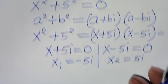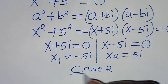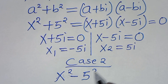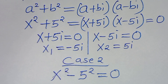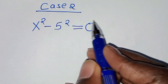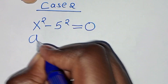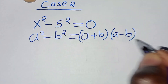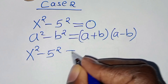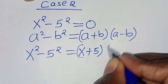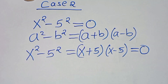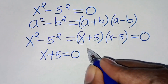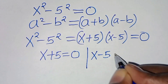Let's proceed to case 2. In case 2, we have x squared minus 5 squared equals 0, and you find that this is in the form of a squared minus b squared, which we can express as (a plus b)(a minus b). So, x squared minus 5 squared is the same thing as (x plus 5)(x minus 5) equals 0. The first part is x plus 5 equals 0, and the second part is x minus 5 equals 0.